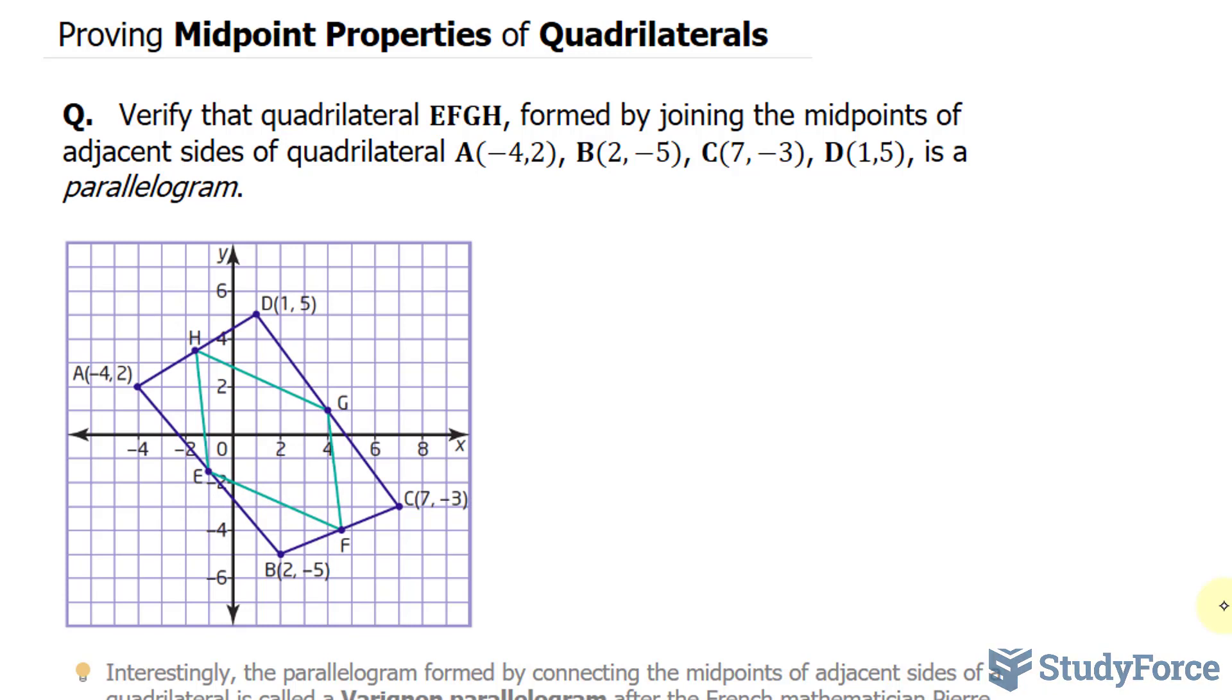Remember that the slope formula looks like this, where M, which represents slope, is Y2 minus Y1 over X2 minus X1.